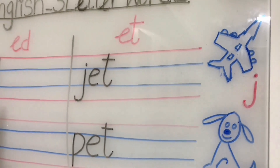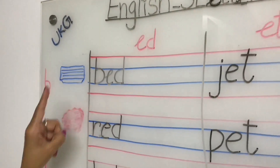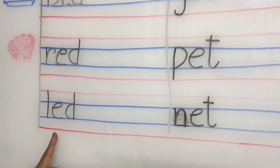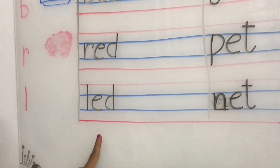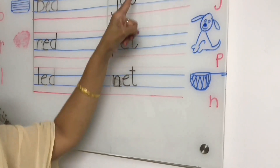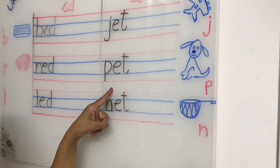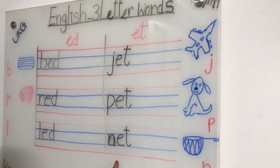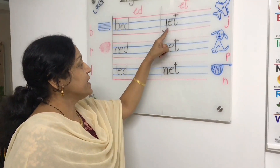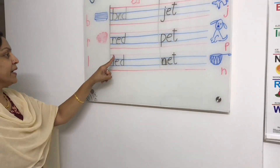Today's three letter words are ED words and ET words. When you join B to ED it becomes BED. When you join R to ED we can make RED. When you join L to ED we can make LED — BED, RED, LED. These are ET words: when you join J to ET we make JET, P to ET makes PET, N to ET makes NET — JET, PET, NET. BED, RED, LED.